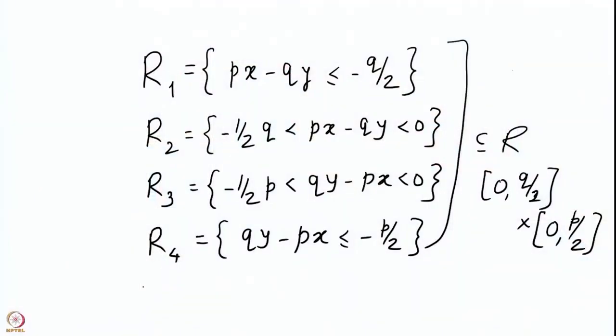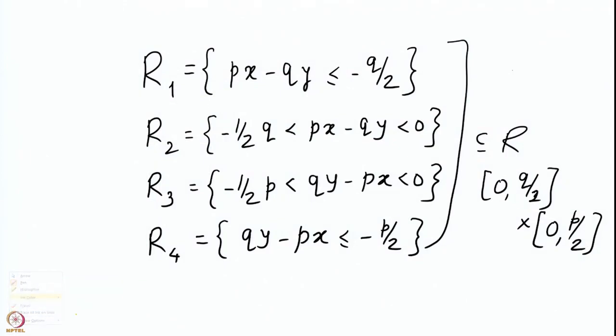Here are those 4 parts on the screen: R1 is given by this particular equation, this is R2, this is R3, and then we have R4. These 4 parts together give you R. R is the disjoint union of the Ri as far as the lattice points are concerned.